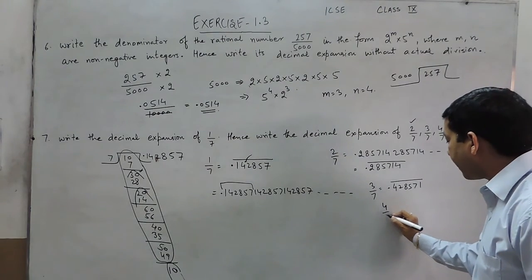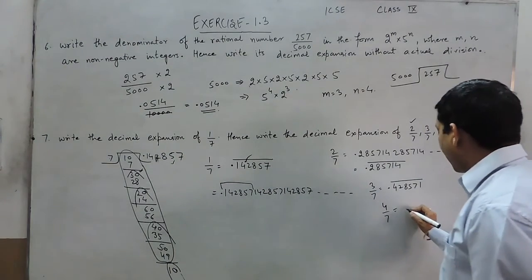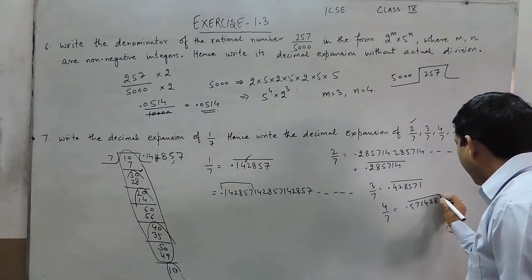If it is 4 upon 7, that means the process will start from here, so it will start from 5. So I can write it as 0.571428 with a bar.